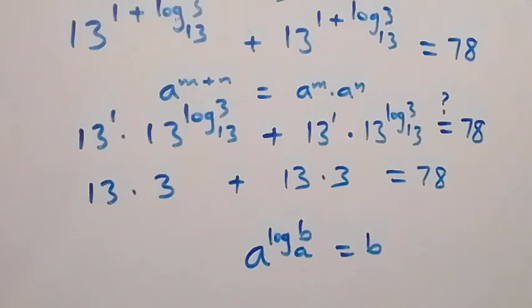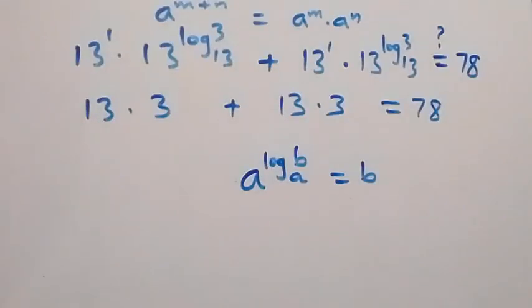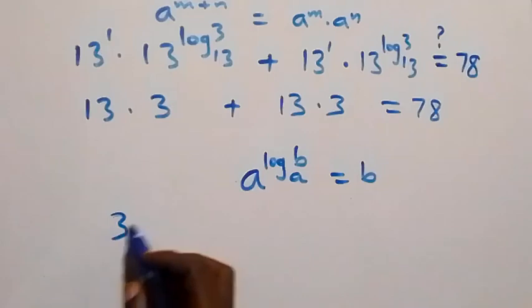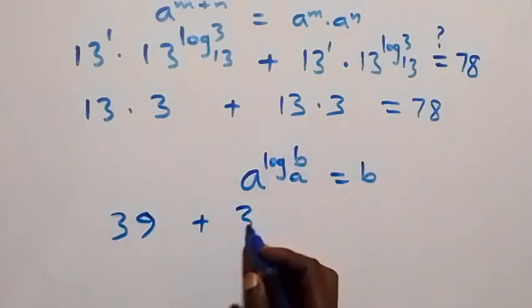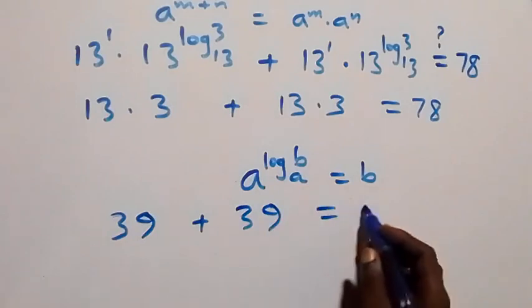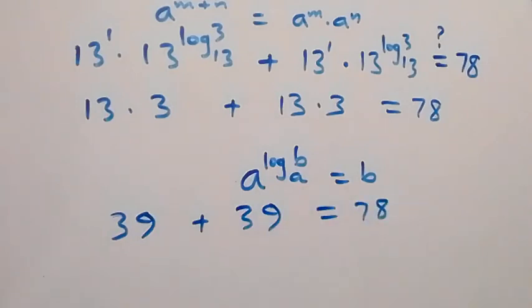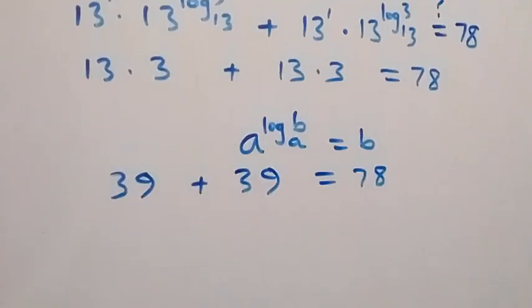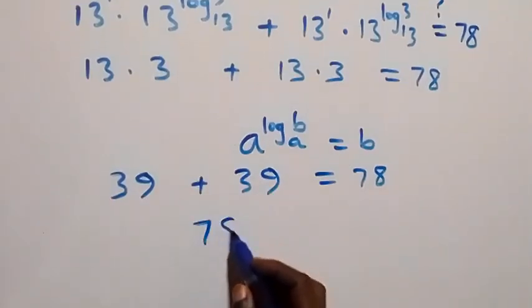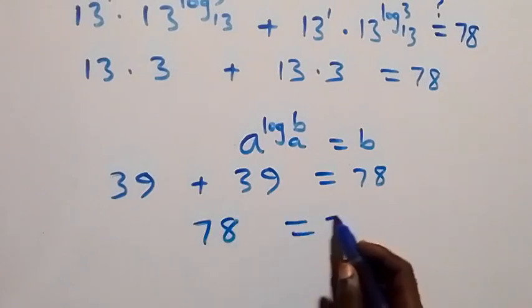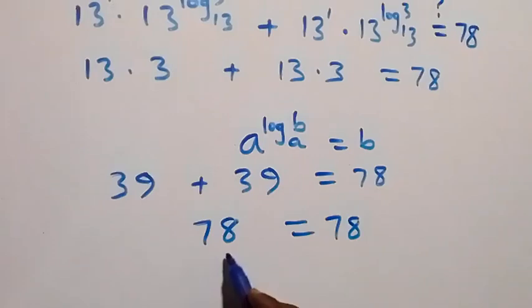From here, 13 times 3 gives 39, and 39 plus 39 equals 78. The left-hand side equals the right-hand side.